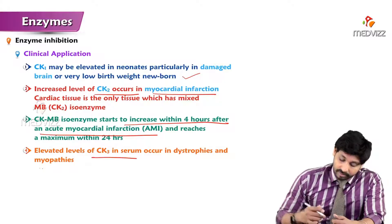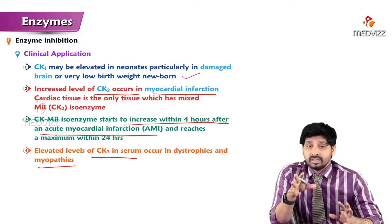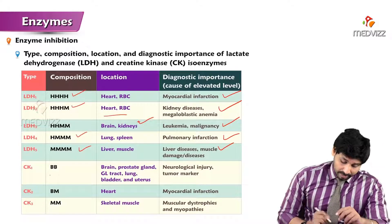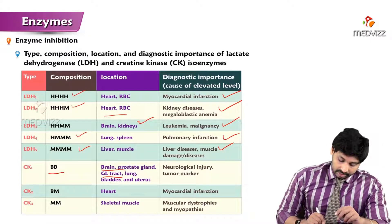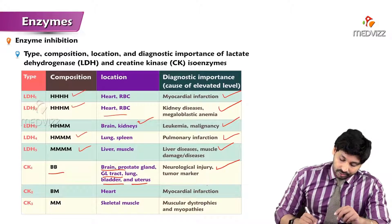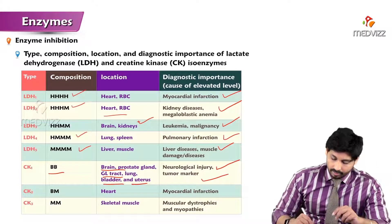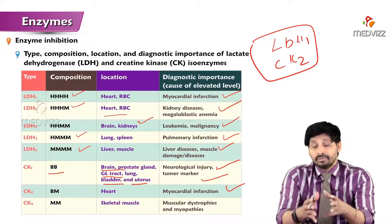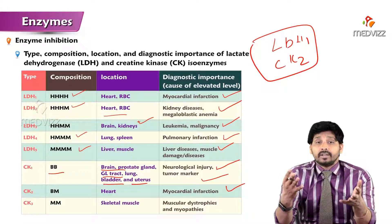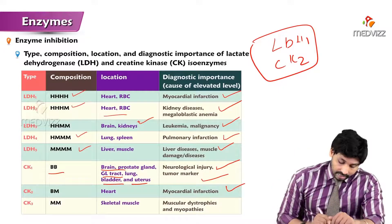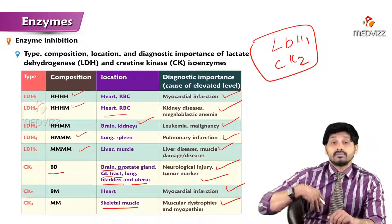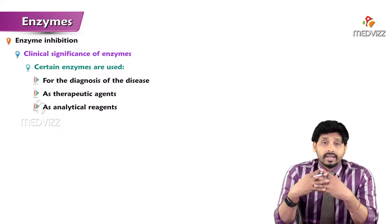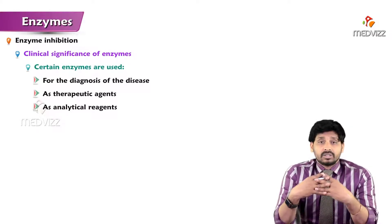In the overall CK chart: CK1 (BB type) is present in brain, prostate gland, gastrointestinal tract, lung, bladder, and uterus, elevated in neurological injury and as a tumor marker. CK2 is elevated in myocardial infarction. CK3 is present in skeletal muscles, elevated in muscular dystrophies and myopathies. As an exam key point: in myocardial infarction, both CK2 and LDH1 levels will be elevated. That's all about lactate dehydrogenase and creatine kinase as isoenzymes.